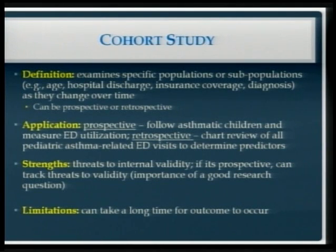Cohort studies have a number of strengths. They limit threats to internal validity. For example, if you're following people over time, you can establish temporality because you know the exposure happened before the outcome. That's a huge strength for determining causal inference in a prospective study. If it's retrospective, it's more challenging because you might not know the temporality of your exposure and outcome. This is why we stressed the importance of a good research question — to map out your conceptual model to reduce selection bias.